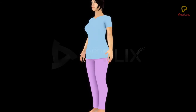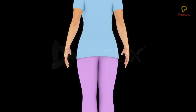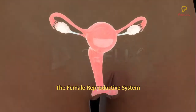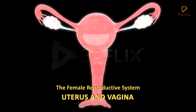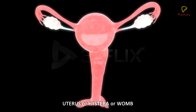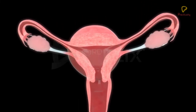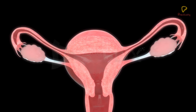Objective: To study about human reproduction, the female reproductive system, uterus and vagina. The uterus is a single, large, muscular and glandular, inverted pear-shaped sac.